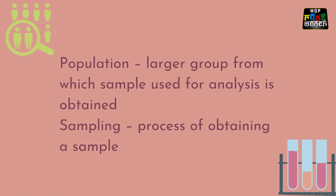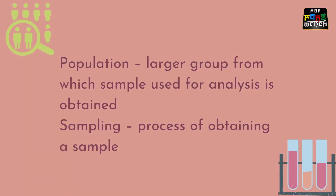The analytical technique is selected based on the property that is to be measured, the type of food to be analyzed, and the reason for carrying out the analysis. To obtain accurate and precise results, proper collection of samples is essential. The sample used for analysis is obtained from a larger group called the population, and the process of obtaining a sample is referred to as sampling.